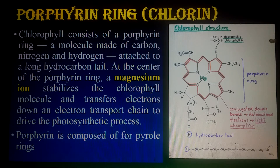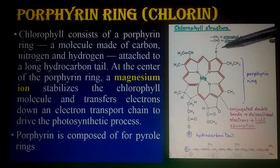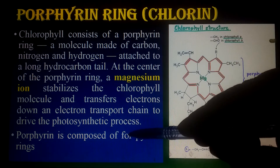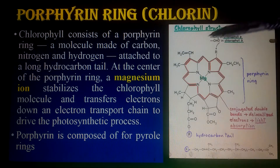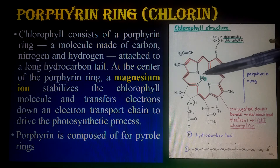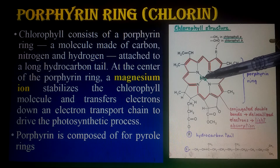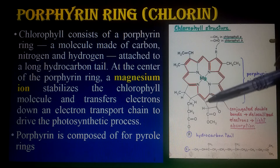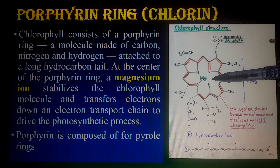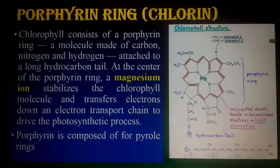There is another word commonly used for the porphyrin ring — 'chlorin,' derived from the word chlorophyll meaning green. The porphyrin ring of chlorophyll consists of four pyrrole rings. One, two, three, four pyrrole rings — and these four pyrrole rings are attached to the central magnesium ion, making the structure known as the porphyrin ring.